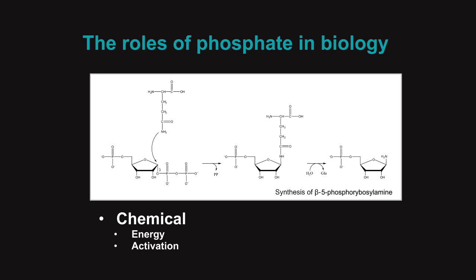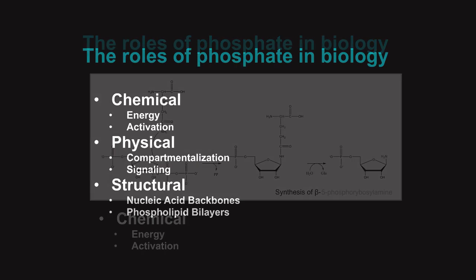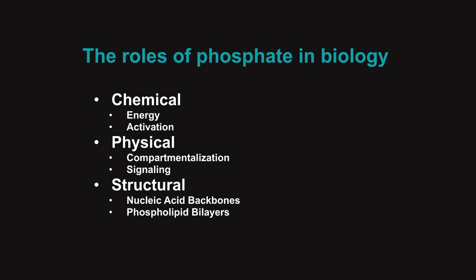This type of transfer of phosphorylation to produce favorable energetics is used throughout biology to promote other reactions. Phosphate has all of these varied roles in life: chemical energy transfer and activation, physical compartmentalization, structural aspects of nucleic acid backbones and phospholipid bilayers. It's really hard to think of another chemical moiety that would be able to fulfill all of these roles — phosphate is just really tidy in how it can address all of the different needs of the cell.